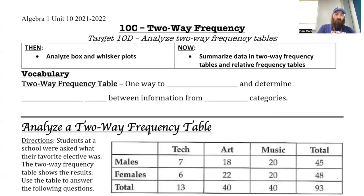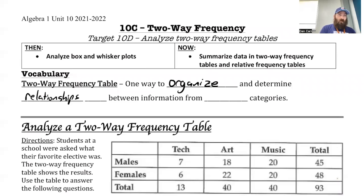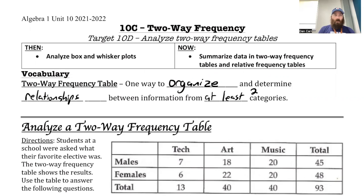So a two-way frequency table is one way to organize and determine the relationships between information from at least two categories.